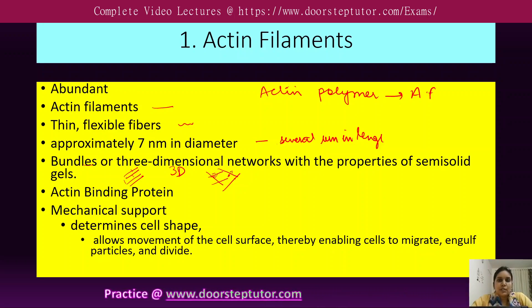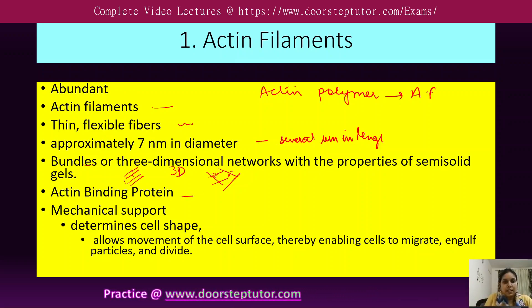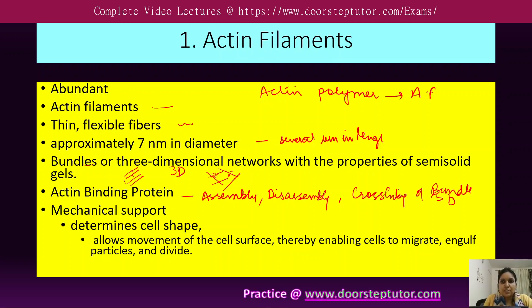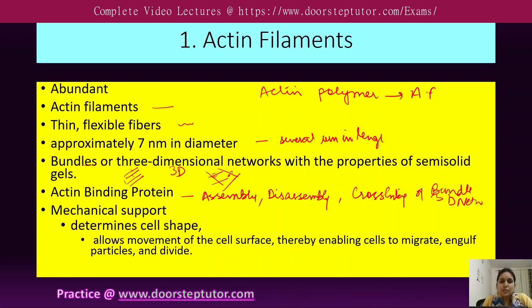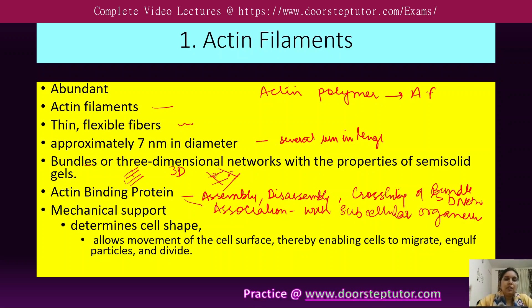Actin filaments are not stable — they are dynamic in nature. Their assembly and disassembly is regulated by actin binding proteins. These actin binding proteins help in the assembly or disassembly of actin filaments, assist in cross-linking to form bundle structures or three-dimensional network structures, and facilitate the association of actin filaments with other subcellular organelles.